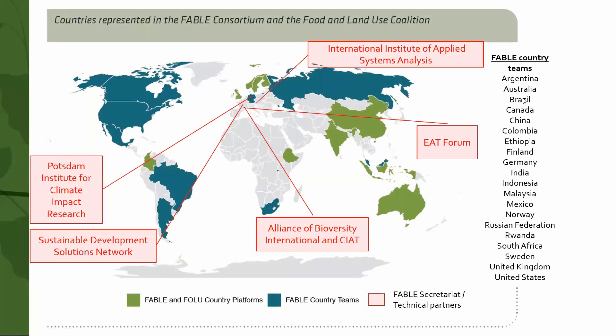The Fable Consortium currently comprises research teams from 20 countries, who did not always have access to integrated models that could represent the evolution of land use and food systems at the national level. We have developed the Fable Calculator to have a model that could easily be adapted to different countries, and transferred even to non-modelers.